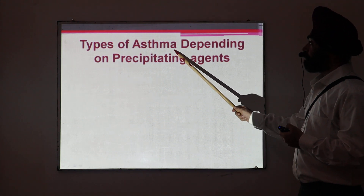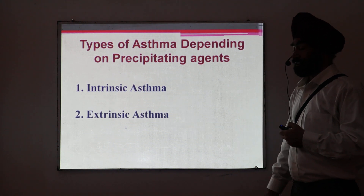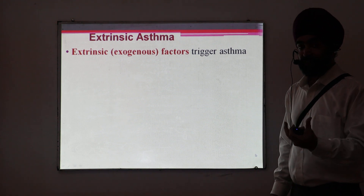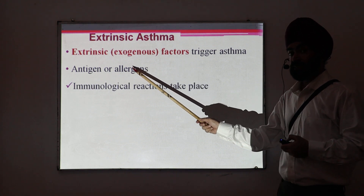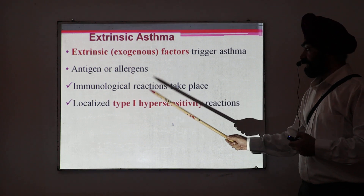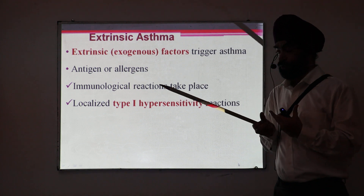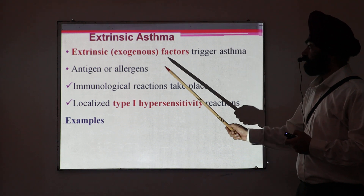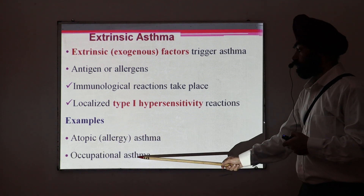Coming to how we can classify asthma depending on the precipitating agents: intrinsic asthma and extrinsic asthma. Extrinsic asthma means there are some external — exogenous — factors that may trigger the development of asthma, like allergens. These allergens lead to the development of an immunological reaction, and there is basically a type 1 hypersensitivity which is localized to the bronchi region only. This immunological reaction is responsible for the development of asthma when allergens come. Examples include allergic asthma, also called atopic asthma, or occupational asthma.